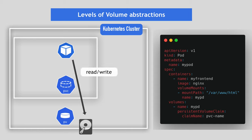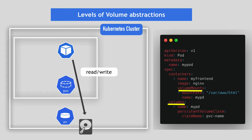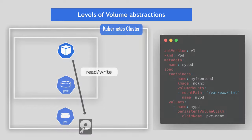When the pod dies and a new one gets created, it will have access to the same storage and see all the changes the previous pod or containers made. The attributes like volumes and volume mounts and how they're used — I will show you more specifically and explain in a later demo video.